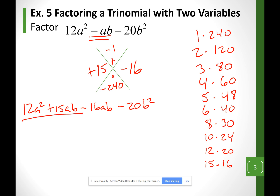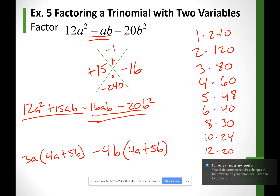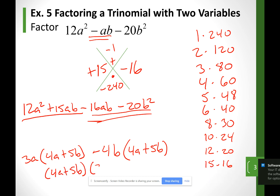Looking at the first two terms, I can divide each by 3a — divide each by 3a and we're going to have 4a plus 5b. Looking at the last two terms, let me divide each by a negative 4b — divide each by negative 4b and we're going to have 4a plus 5b. So my factors will be (4a + 5b)(3a − 4b).